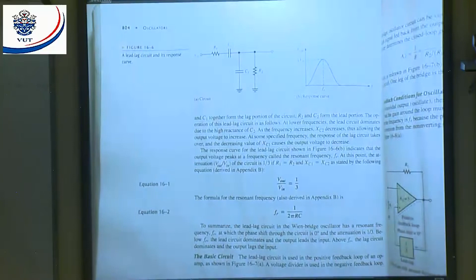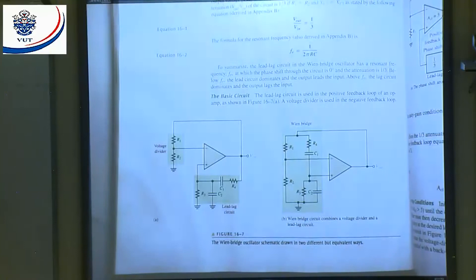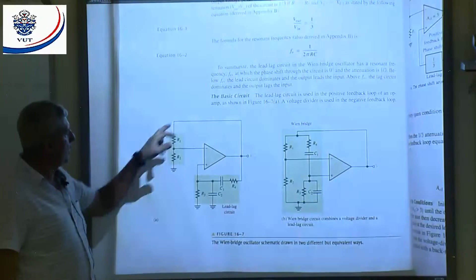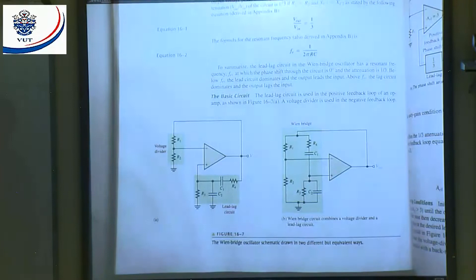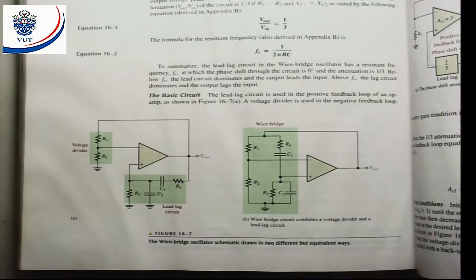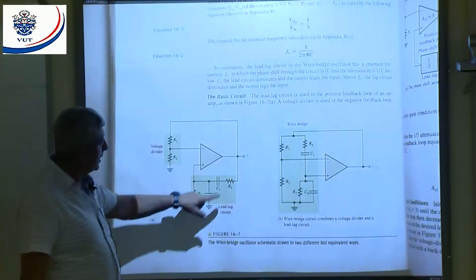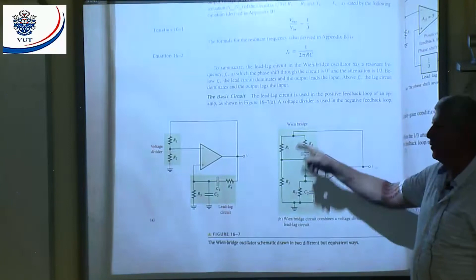Let's look at the basic circuit of a Wien bridge oscillator. You can see where my input is — it's a non-inverting amplifier. That means my input and output are in phase. And here's my lead-lag circuit. If I redraw that circuit, that's why they call it a Wien bridge oscillator — because that is a bridge connection.